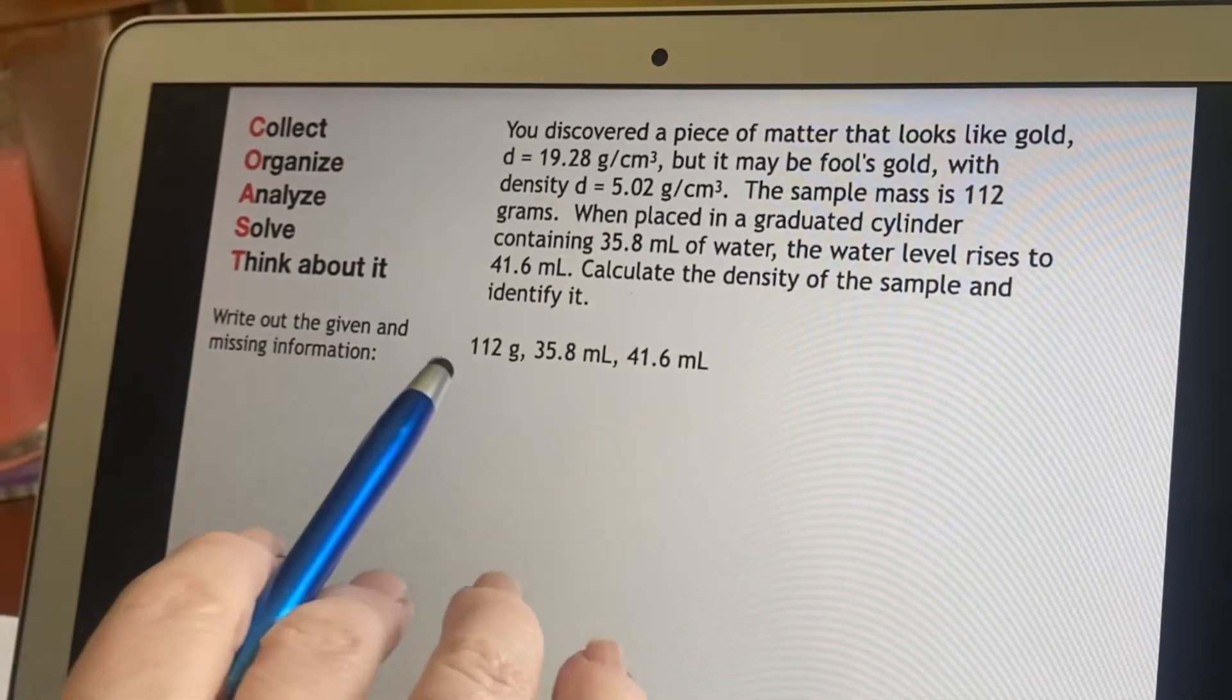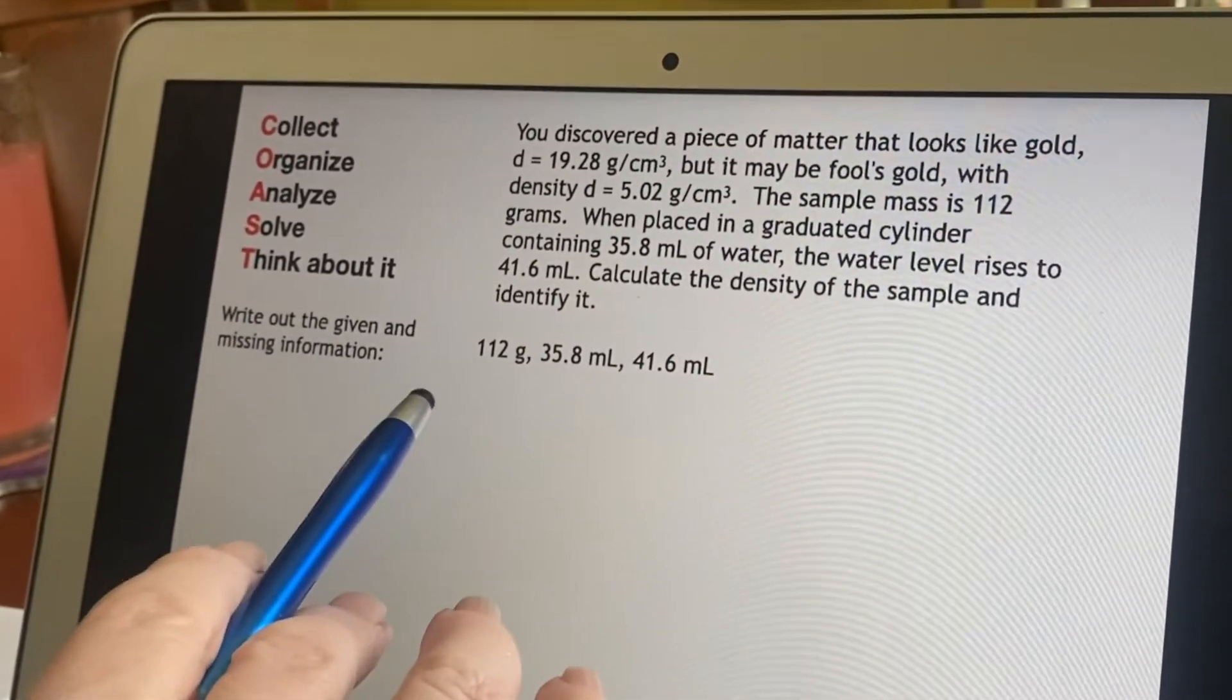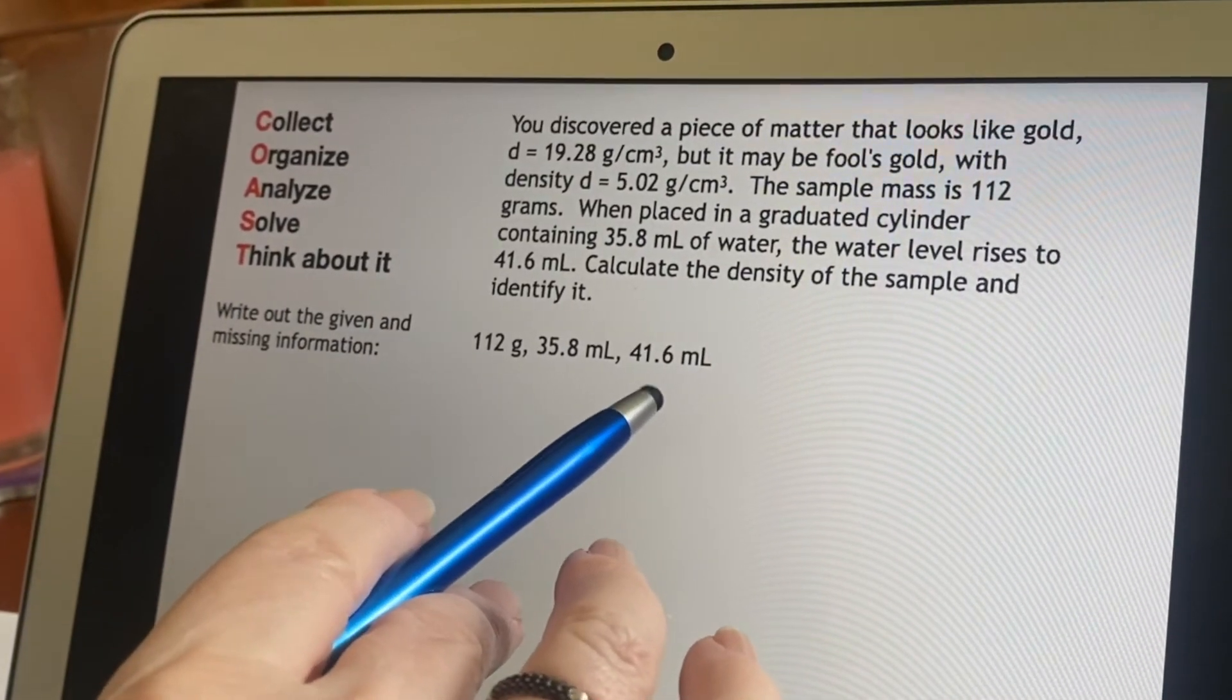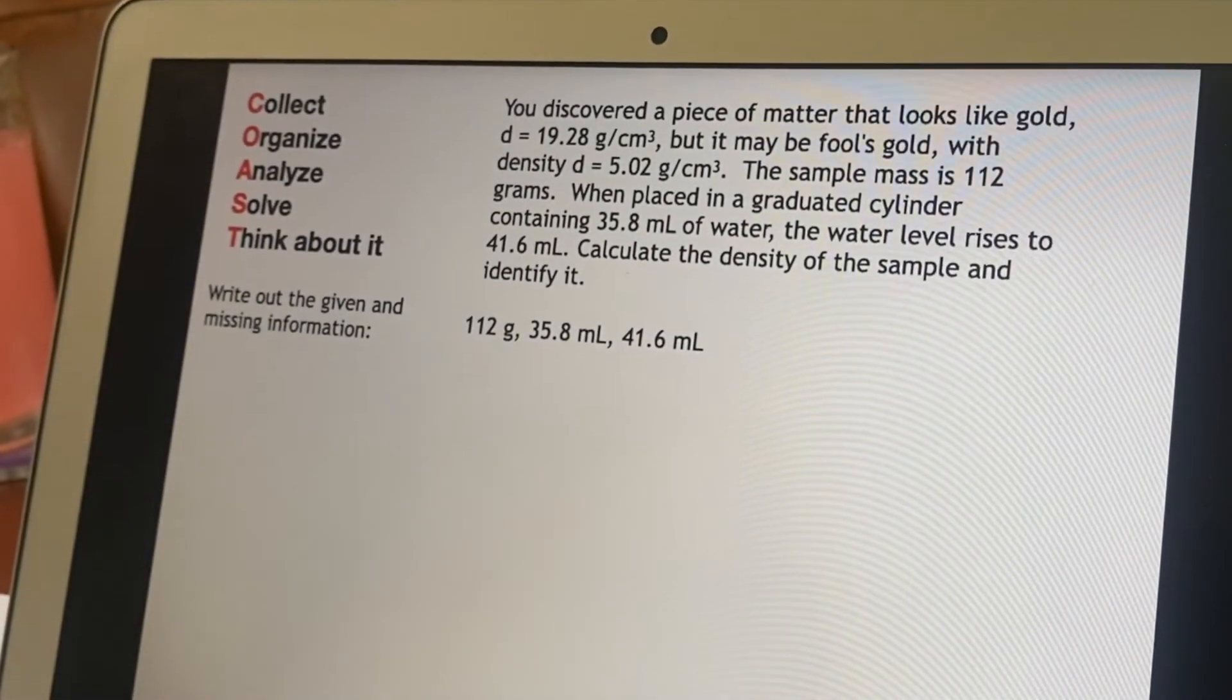So I've got a plan. Here's my things that I've pulled out of the information. How many grams and then two different water levels. Okay. That's fine. I've collected my stuff.